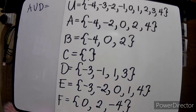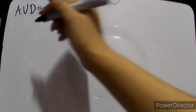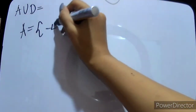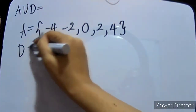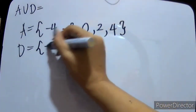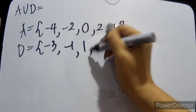If there are common elements, there is no repetition allowed — the elements must be distinct. So, set A is {negative 4, negative 2, 0, 2, 4} while D is {negative 3, negative 1, 1, 3}.